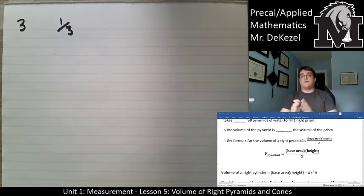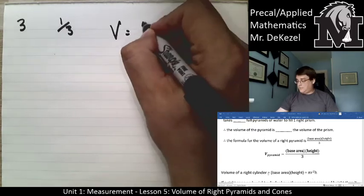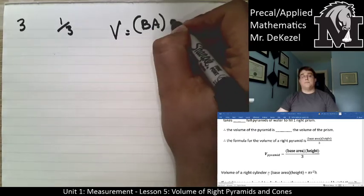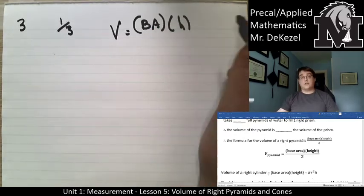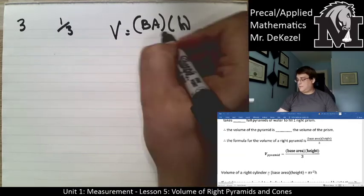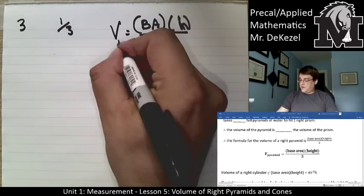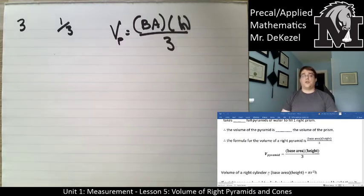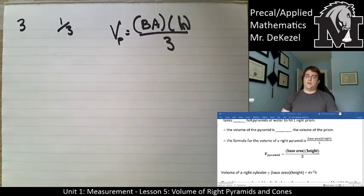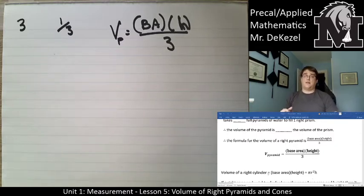The volume of a pyramid is equal to the base area multiplied by its height — not the slant height, but the actual height — all divided by three. That is the formula: V = (base area × height) / 3. I recommend writing this down on your formula sheet. It is one-third the volume of a right prism with the same height and base dimensions.